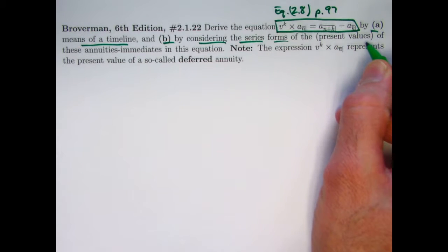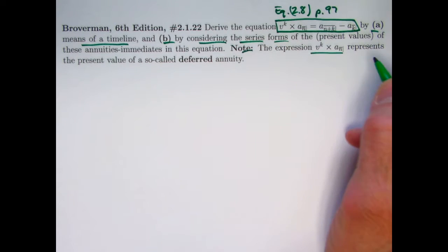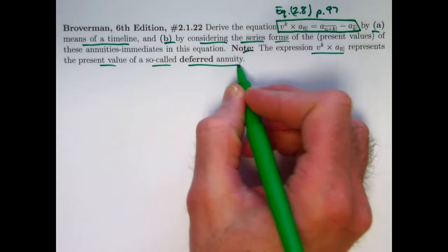By the way, I'm putting this in parentheses because in the textbook they didn't actually put those words in there, but I'm trying to emphasize that these A's here are present values. Note, you can think of this expression most simply as representing the present value of a so-called deferred annuity.